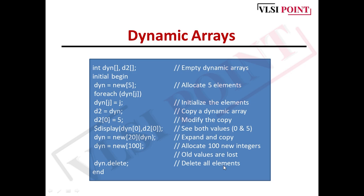Now we are copying this dyn value into d2 and the next line is d2[0] = 5. We are modifying the copy. $display dyn[0] and then d2[0]. So d2[0] is 5 which we allocated here and dyn[0] is 0. What you will get here, the values 0 and 5. Next line is dyn = new[20](dyn). Here we are expanding this dynamic array and copying the existing values. The next line is dyn = new[100]. Here we are allocating 100 new integers and the old values are lost because we are not copying any old values here. The next is dyn.delete(). We are deleting all the elements. This is how you can apply different operations on the dynamic array.